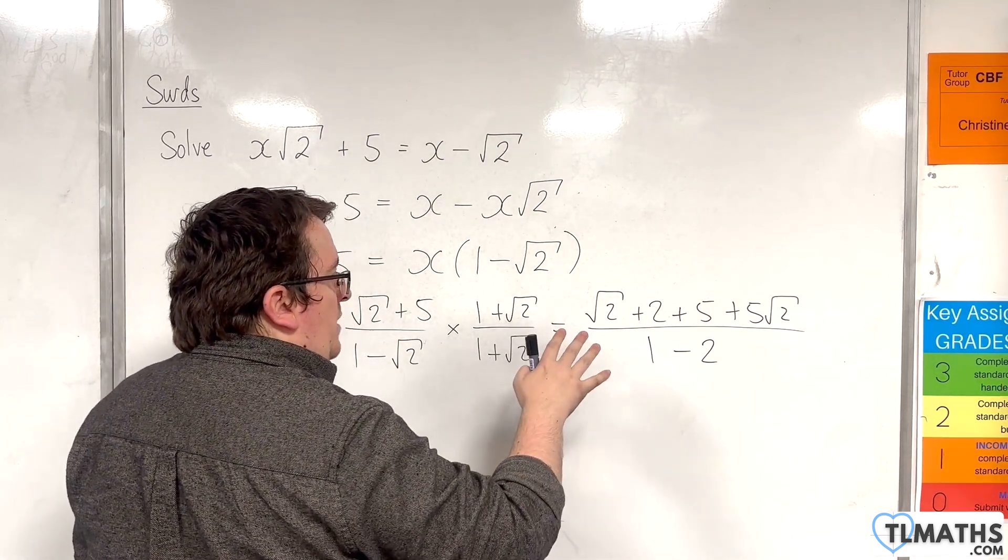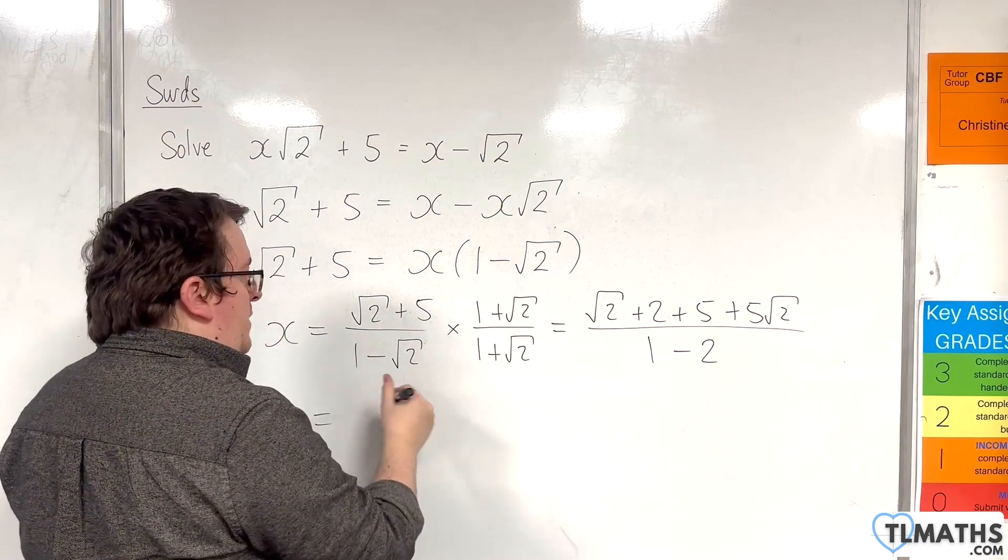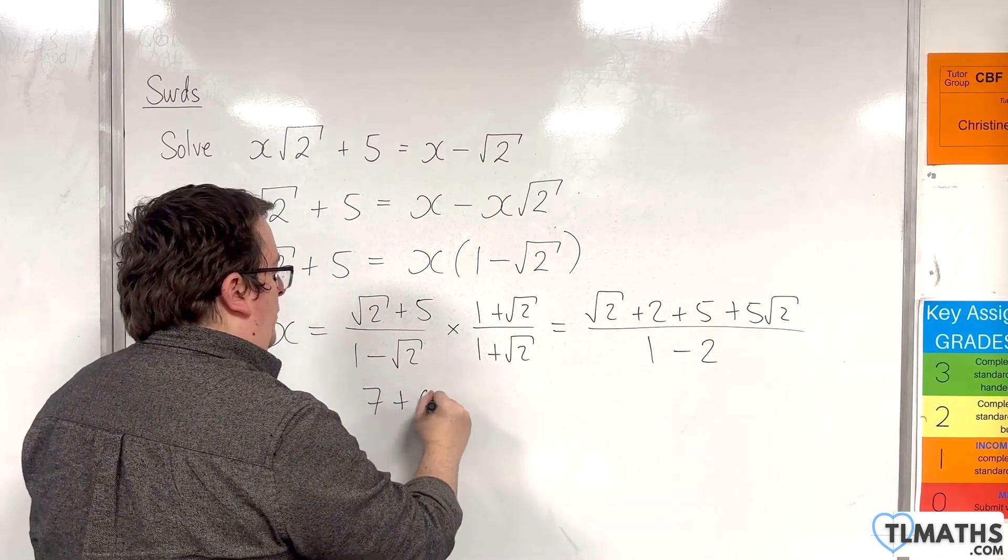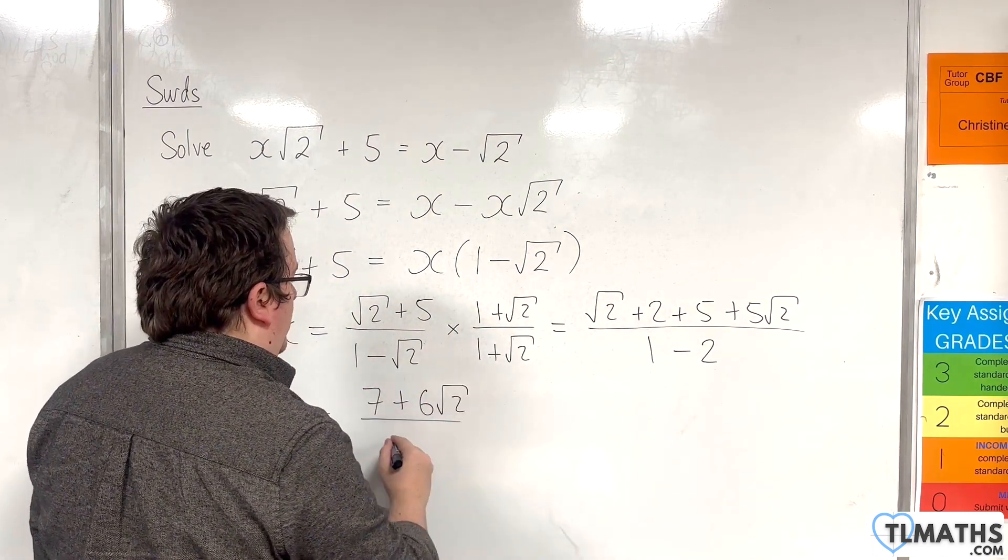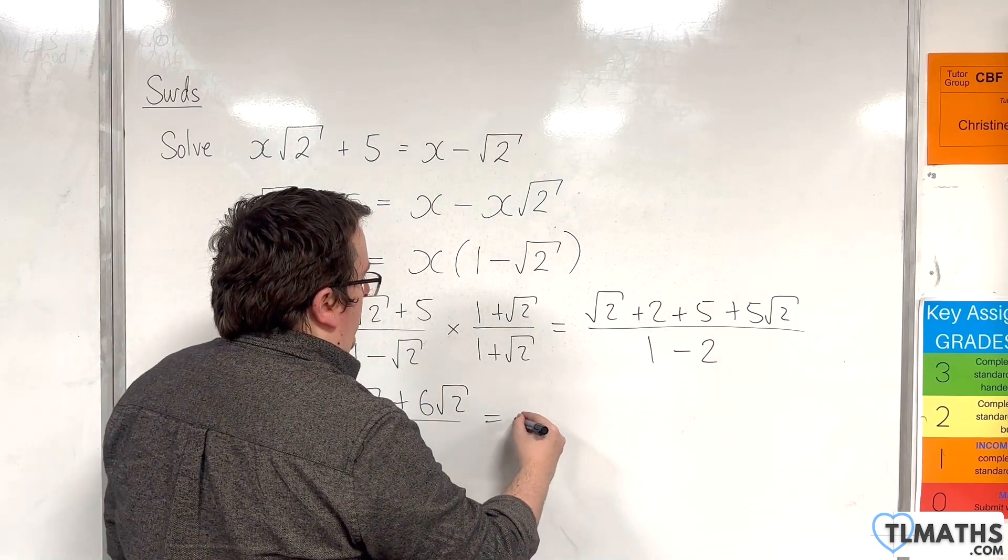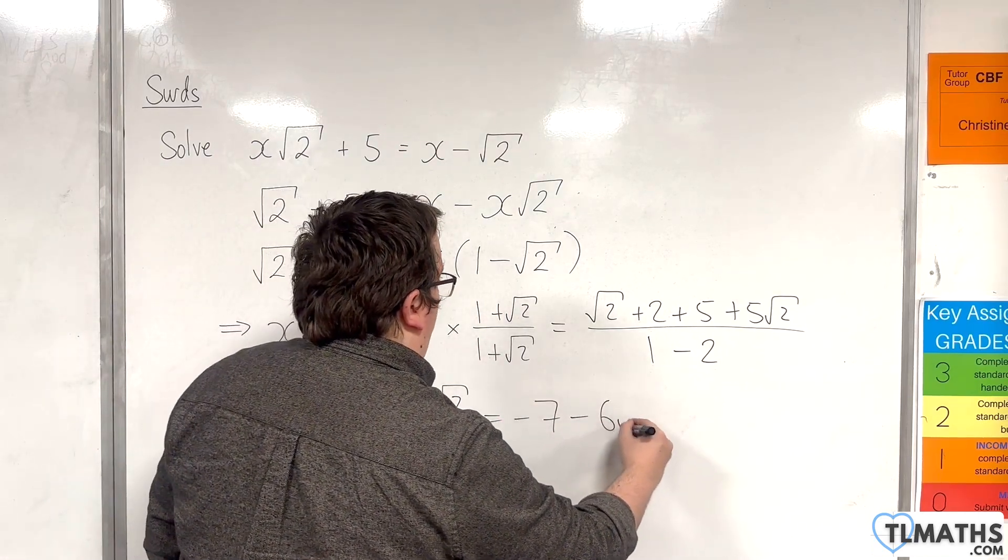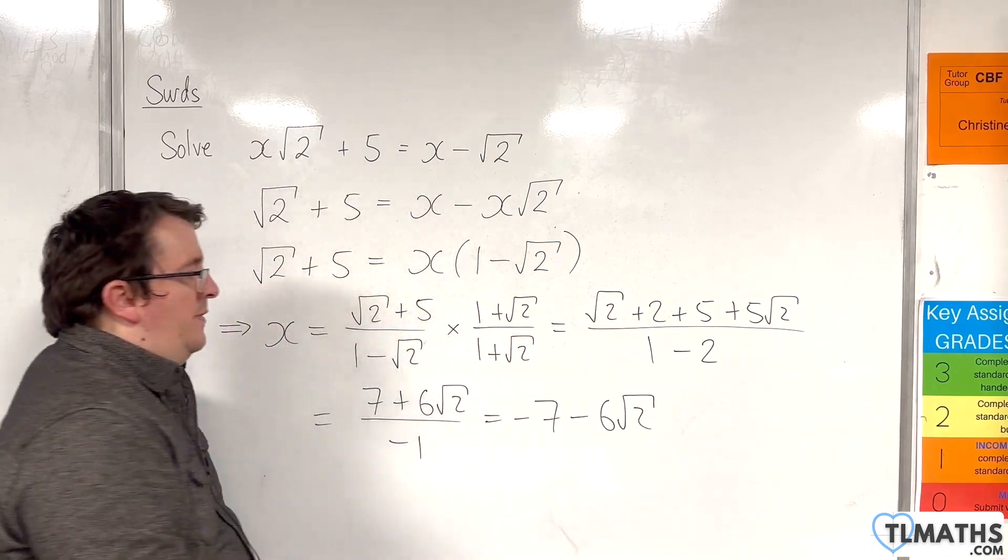And so we have in the numerator 7 plus 6√2. And we're dividing that by -1. And so we can write that as -7 minus 6√2. And that's our result.